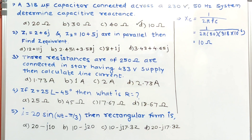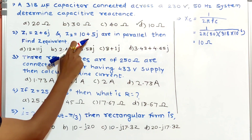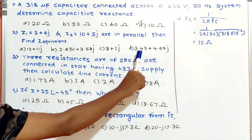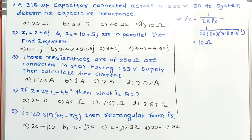Question two: Z1 = 2 + 6j and Z2 = 10 + 5j are connected in parallel. Find Z equivalent. Z1 and Z2 are two impedances connected in parallel. This form is rectangular form.